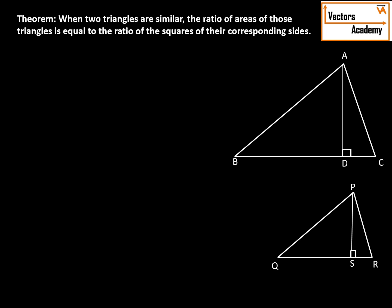So it is given that the triangles are similar and we know their heights as well. We need to prove that the ratio of their areas is equal to the ratio of the squares of the corresponding sides, that is AB² upon PQ², or BC² upon QR², or AC² upon PR².